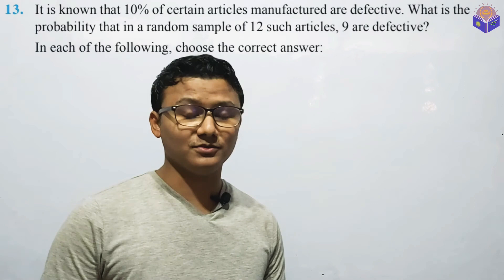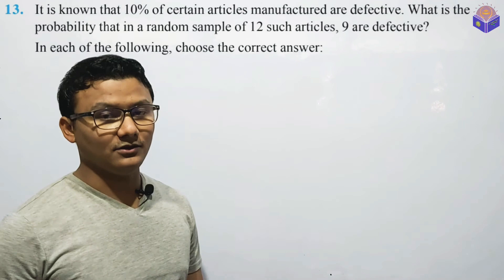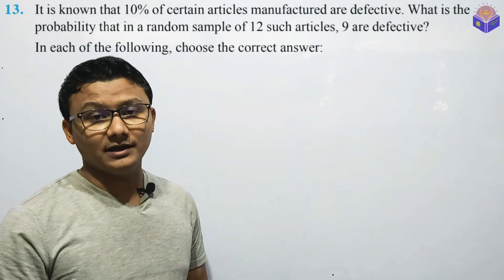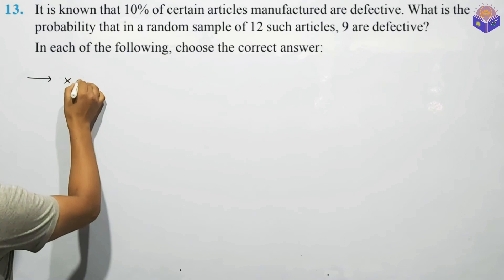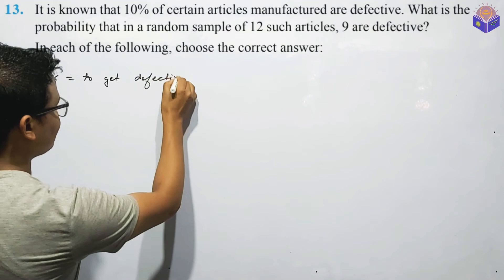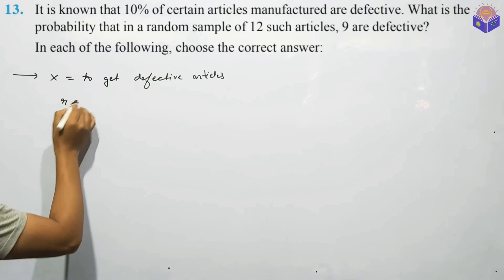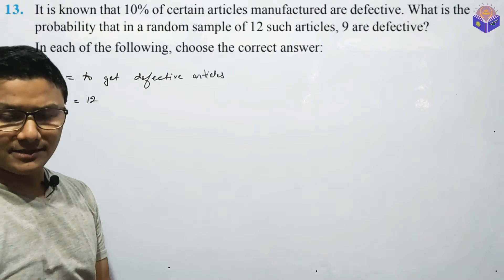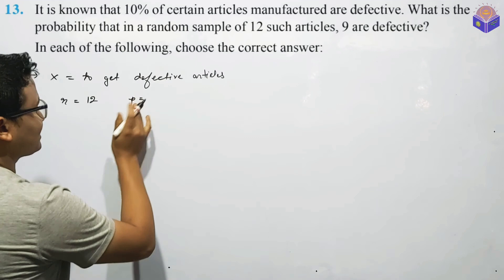Question 13: 10% defective. Then you find the number of success to get defective articles. This is the number of success. The number of trials is 12 articles. If you have 12 articles, you can find out the sample of the same articles. This is the probability of one success.